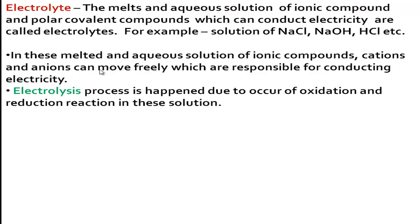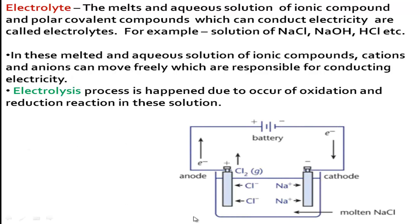In this picture of an electrolytic cell, molten sodium chloride is kept. Inside the molten sodium chloride, sodium ions and chlorine ions are present. When electricity is supplied from outside, it is conducted through these free ions — the sodium ions and chlorine ions. Electricity passes through the circuit because this molten sodium chloride can conduct electricity, making it an electrolytic conductor.